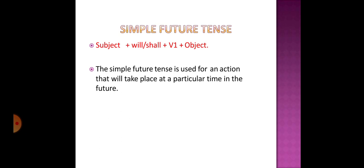The sentence structure of a future tense sentence is: subject plus will or shall, plus verb in the first form, plus object. The simple future tense is used for an action that will take place at a particular time in the future — an action which has not happened or is not happening right now. It also expresses an action that takes place at some time in the future, for example: 'We will go to Delhi tomorrow.' This tense is also used to denote the opinion of the speaker, for example: 'I believe that he will certainly succeed in the examination.'